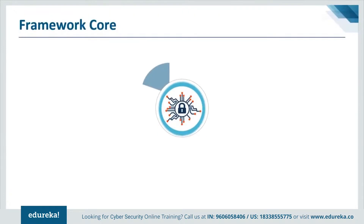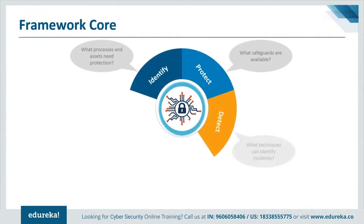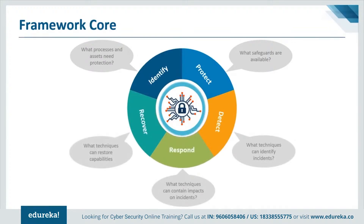The Core is a set of desired cybersecurity activities and outcomes organized into categories and aligned to informative references. The framework Core is designed to be intuitive and to act as a translation layer enabling communication between multidisciplinary teams using simplistic and non-technical language. The Core consists of three parts: functions, categories, and subcategories. It includes five high-level functions — Identify, Protect, Detect, Respond, and Recover — applicable not only to cybersecurity risk management but to risk management as a whole. The Core asks an organization to identify what processes and assets need protection, what protections are available, what techniques can identify threats, what techniques can contain incident impact, and what techniques can restore organizational capabilities after an attack.